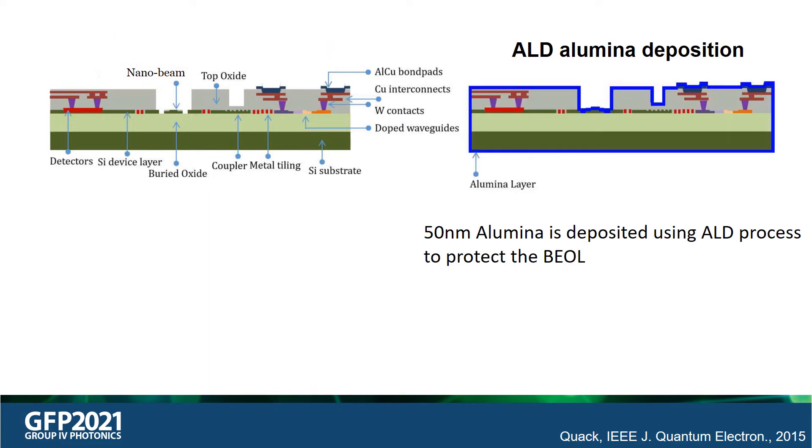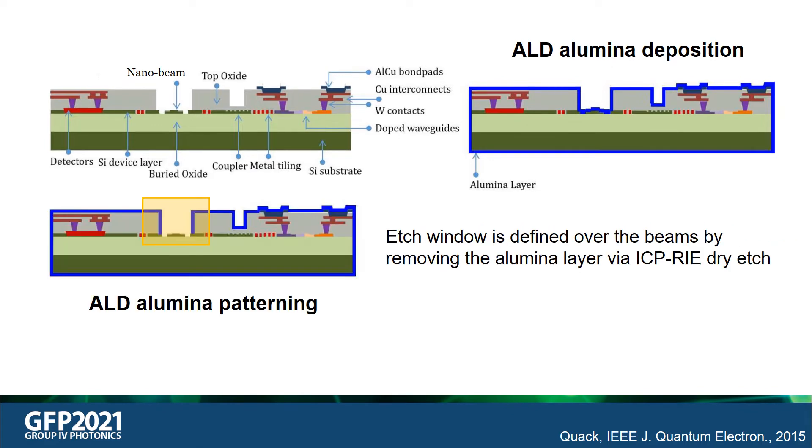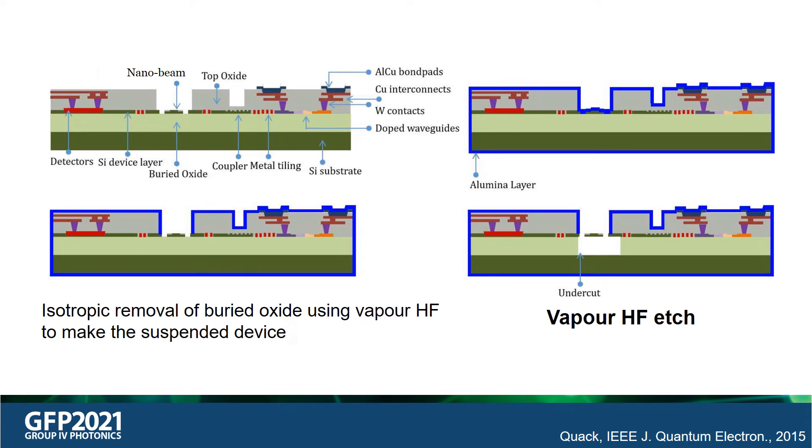First, atomic layer deposition of 50 nanometers of alumina is performed. This is done to protect the back end of the line from the buried oxide removal step. Following this, etch windows are defined over the nanobeams by selectively removing the alumina layer via ICP-RIE dry etching. Finally, a vapor HF etch step is carried out for the isotropic removal of the buried oxide cladding layer, thereby releasing the MEMS devices.